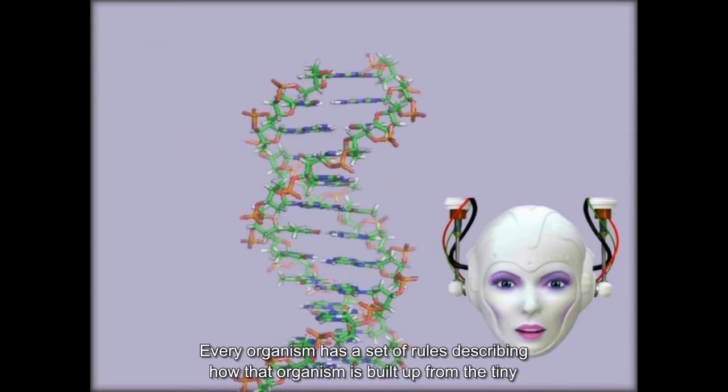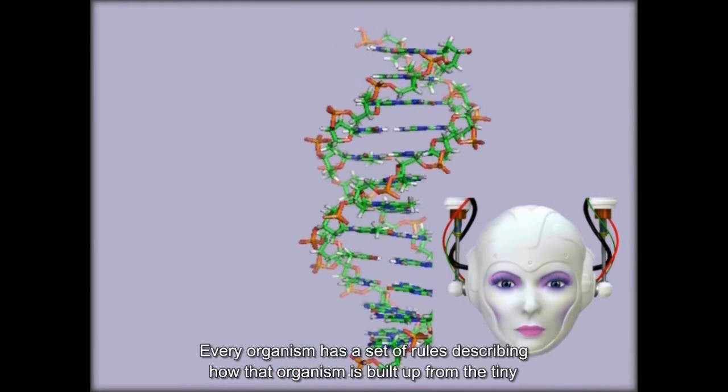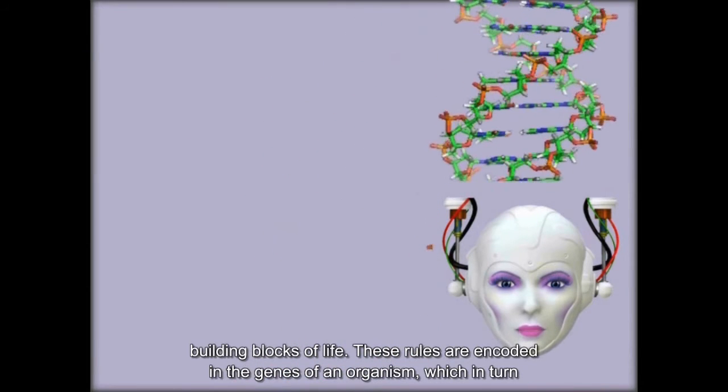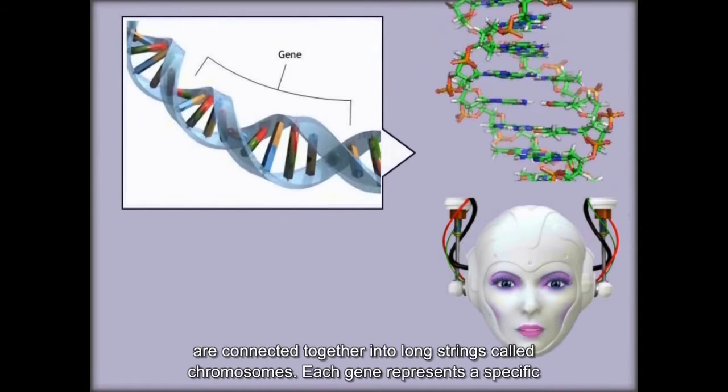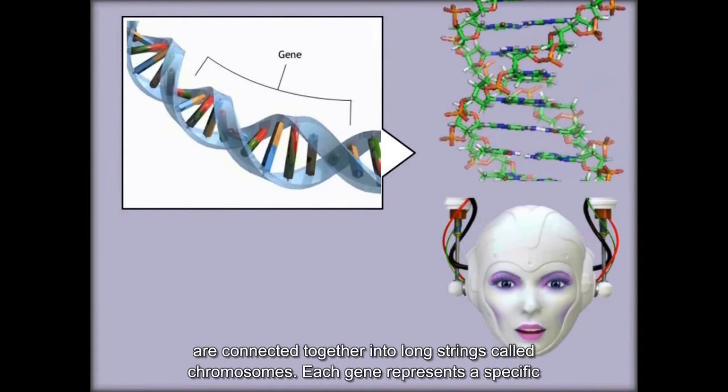Every organism has a set of rules describing how that organism is built up from the tiny building blocks of life. These rules are encoded in the genes of an organism, which in turn are connected together into long strings called chromosomes.